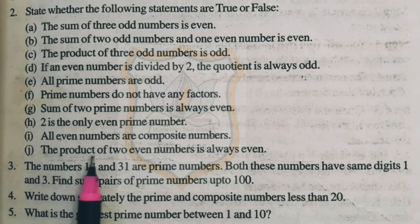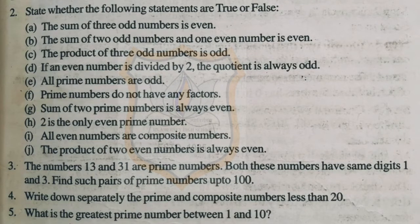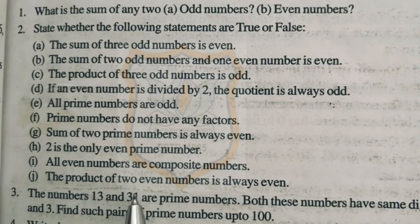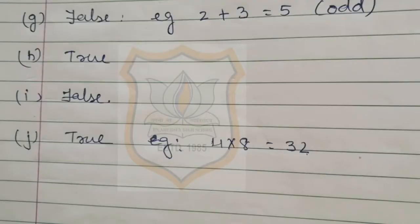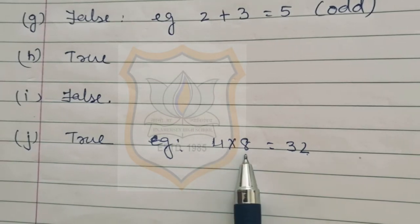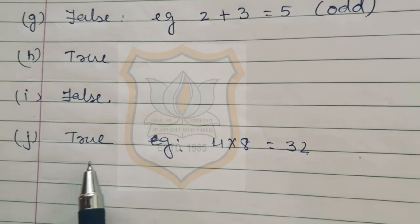Part I: all even numbers are composite. The statement is false, as the even number 2 is not composite — it is a prime number. Part J: the product of two even numbers is always even. If we multiply any two even numbers, we get an even number. The statement is true. For example, 4 times 8 is 32, which is also an even number. So the statement is true.